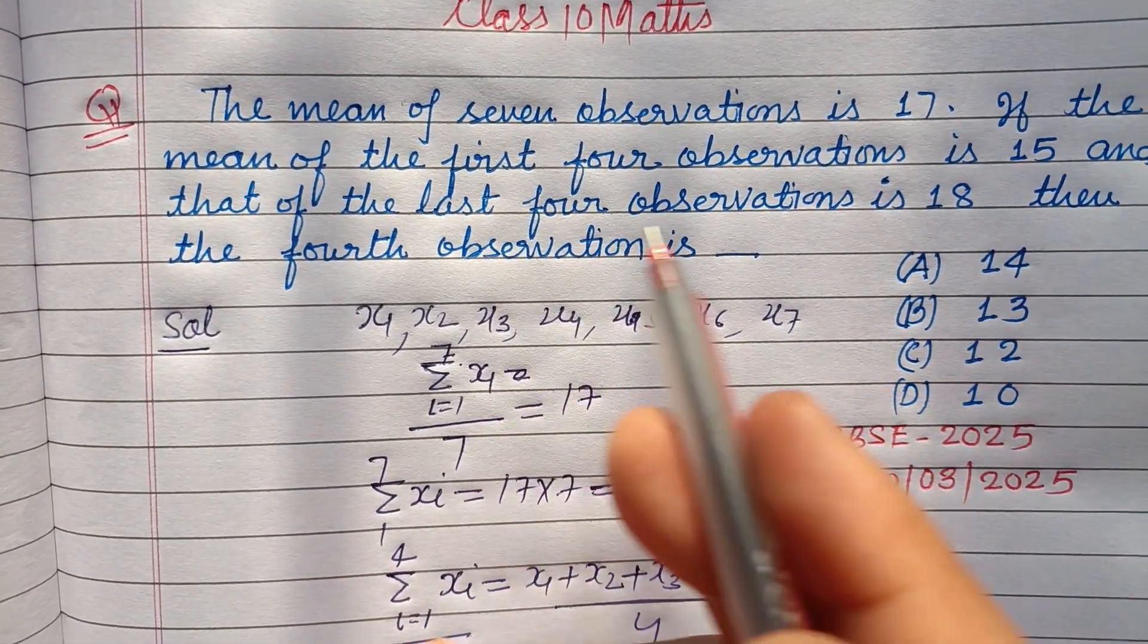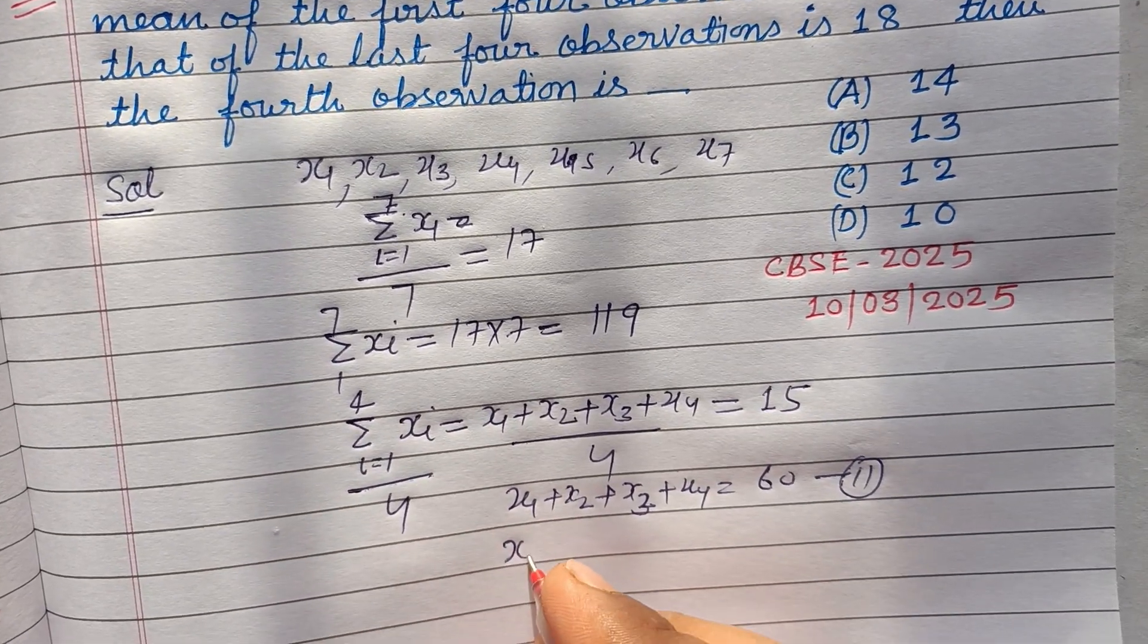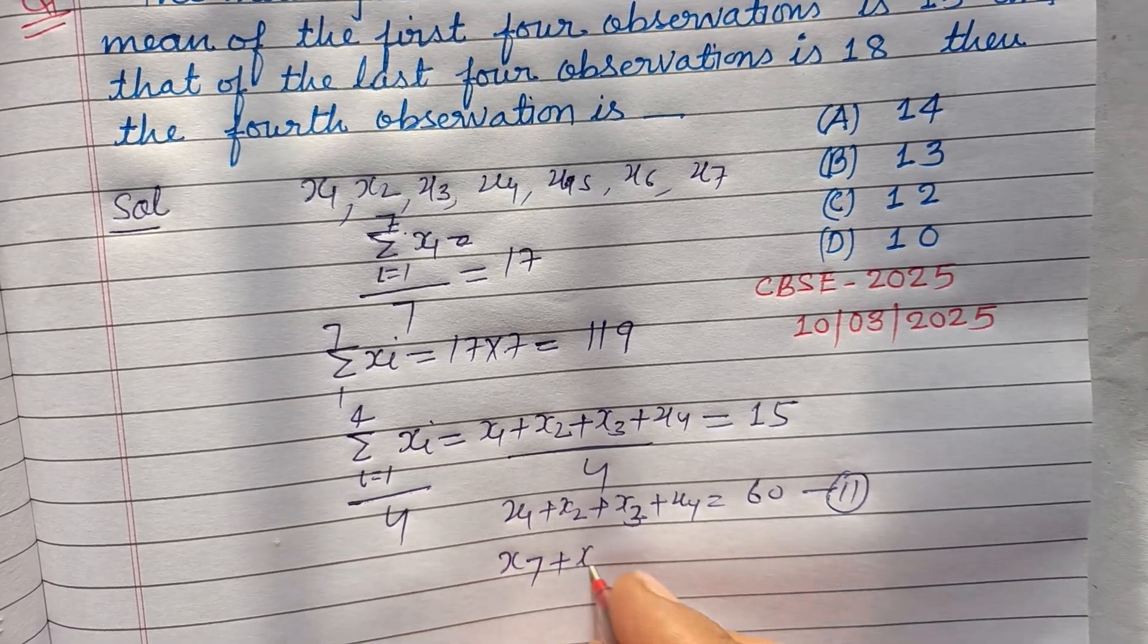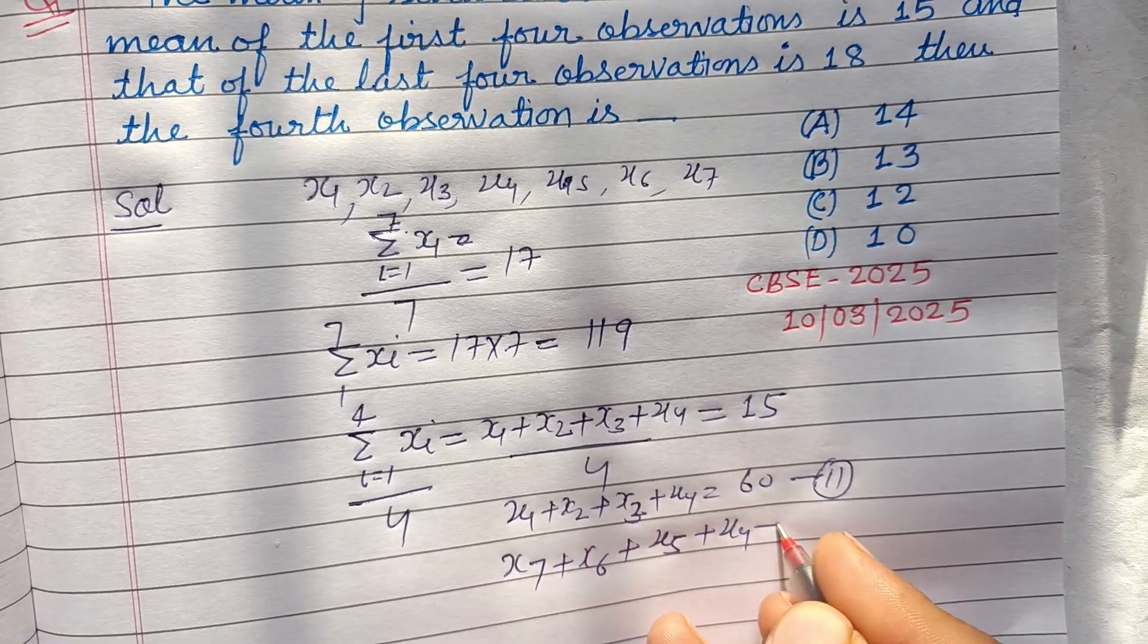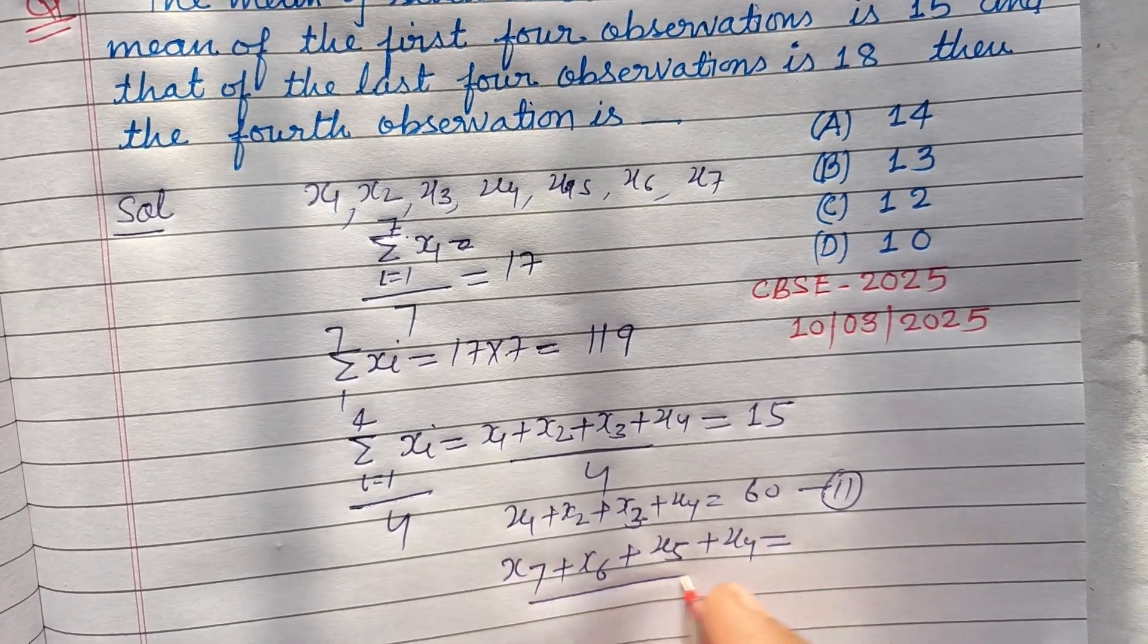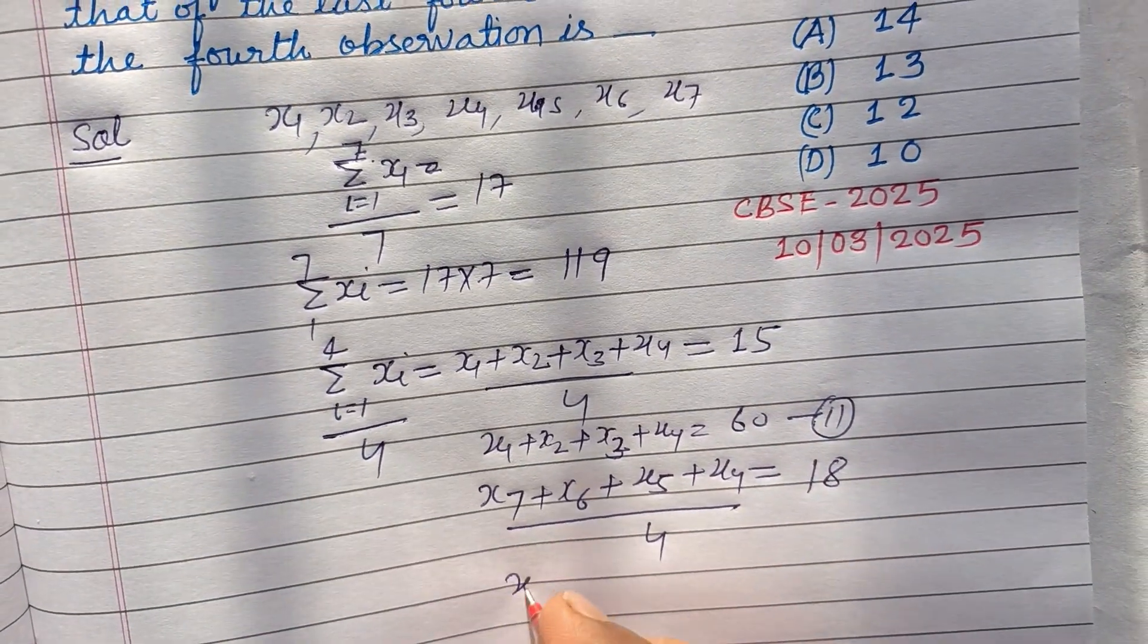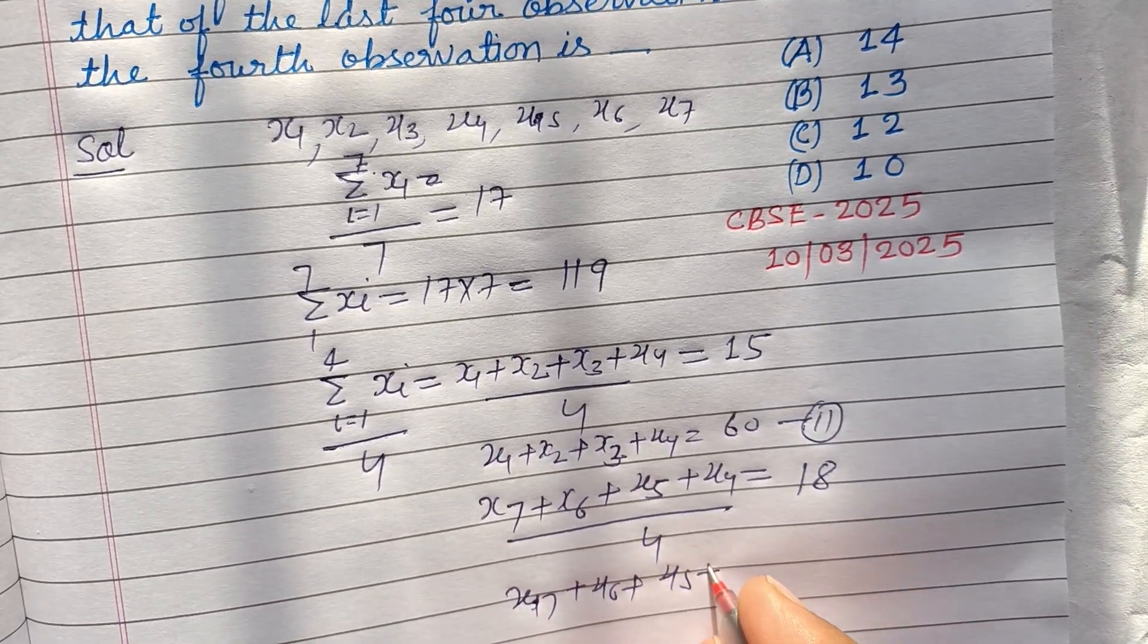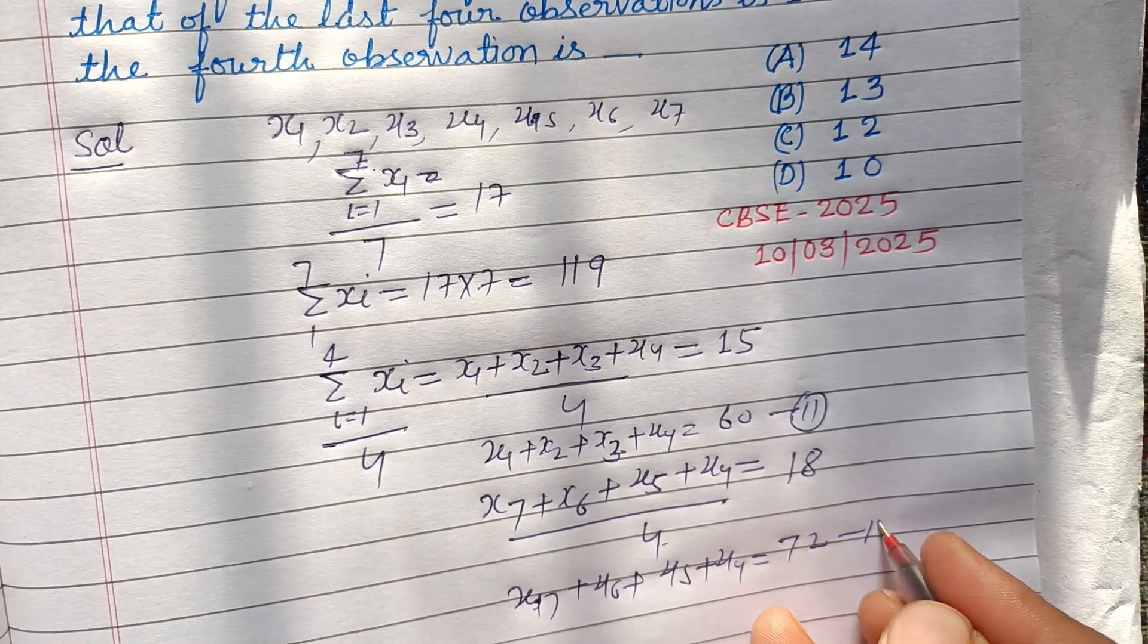And mean of the last 4 observations is 18. So x7 plus x6 plus x5 plus x4 upon 4 is given to us as 18. So x7 plus x6 plus x5 plus x4 equals 72. This is our third equation.